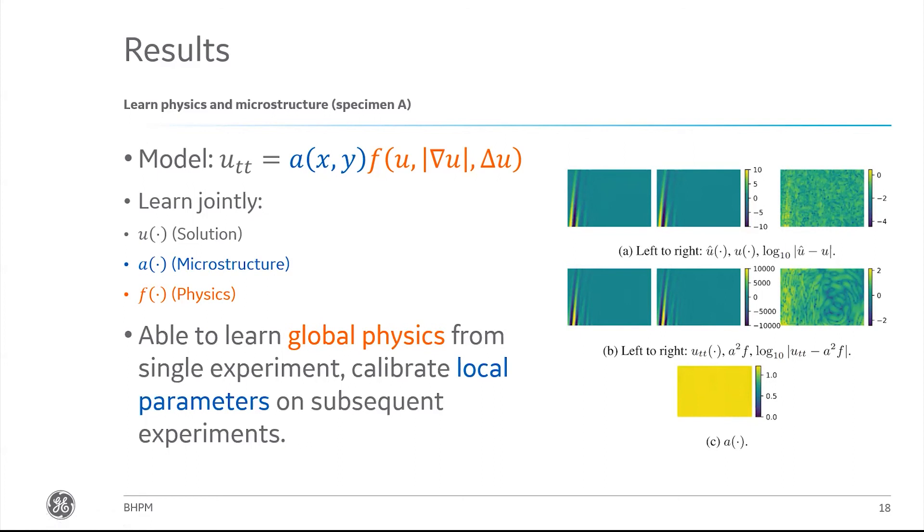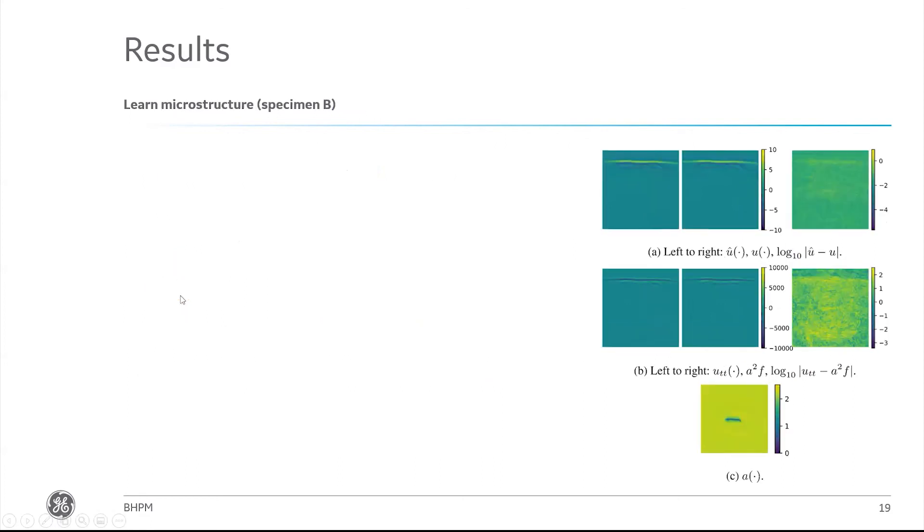Given that learned physics F, what we're going to do now is step over to the second specimen, this cracked specimen. We're going to use the same model. This time we're going to try and learn the solution again, that representation, along with a microstructure for this experiment. But we're going to fix the physics and see whether we were able to figure out something that makes sense here.